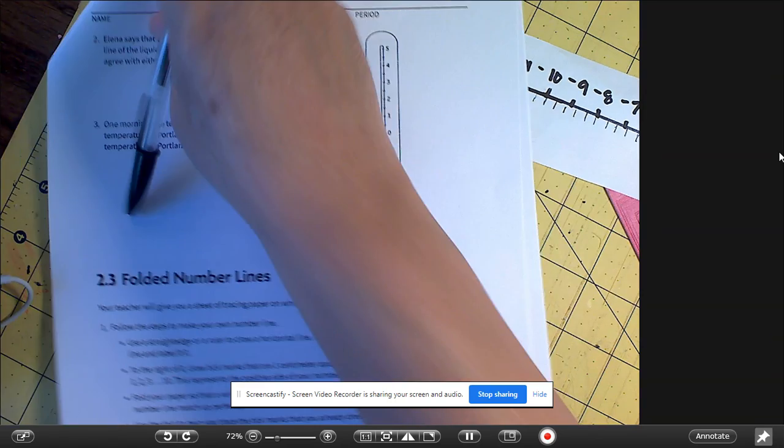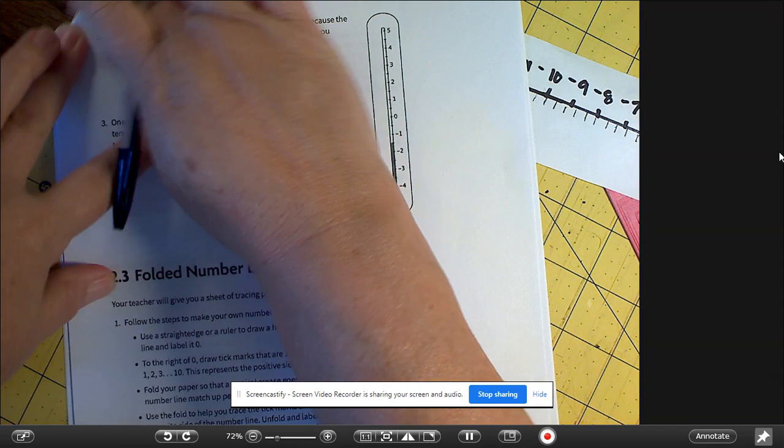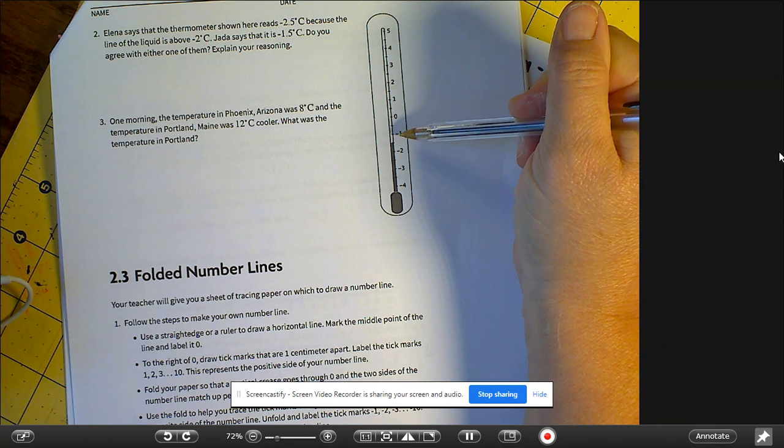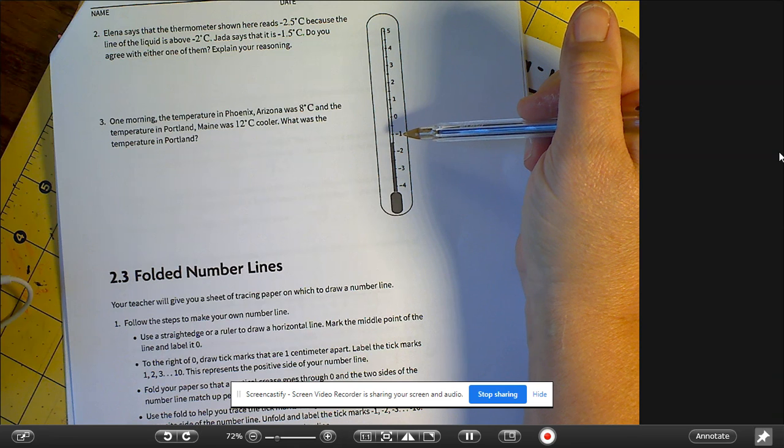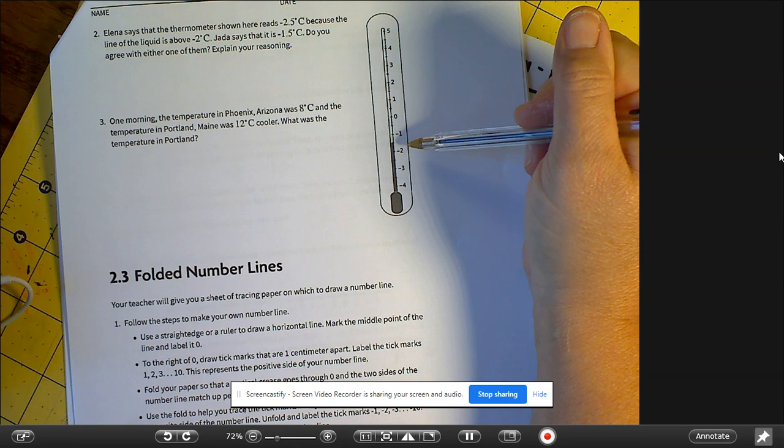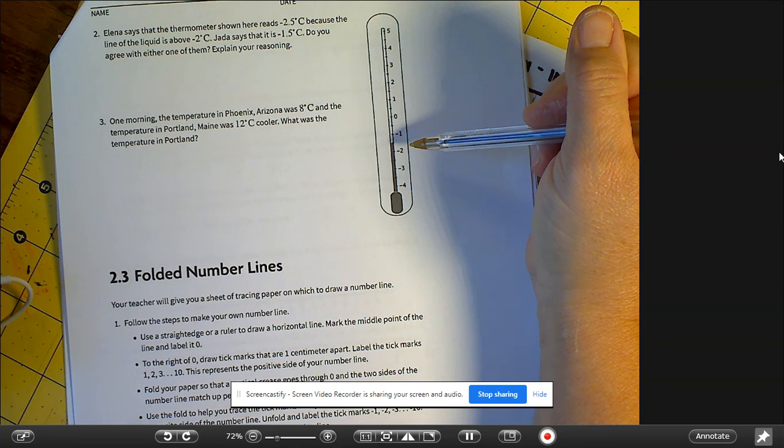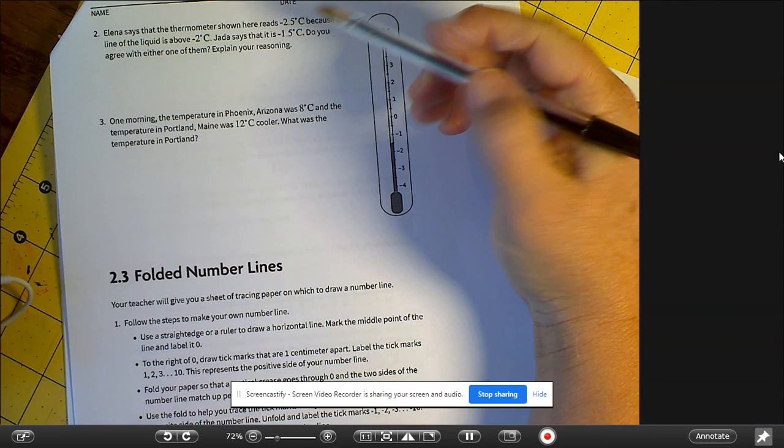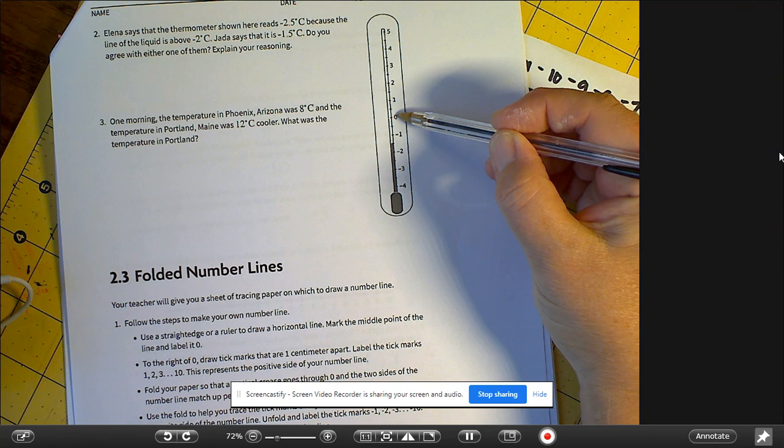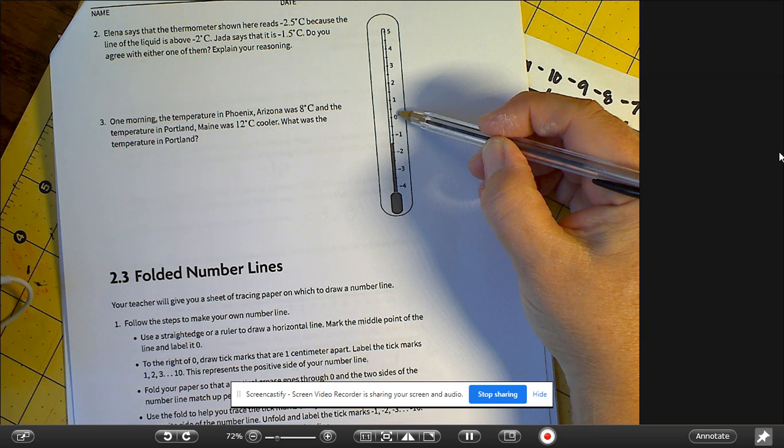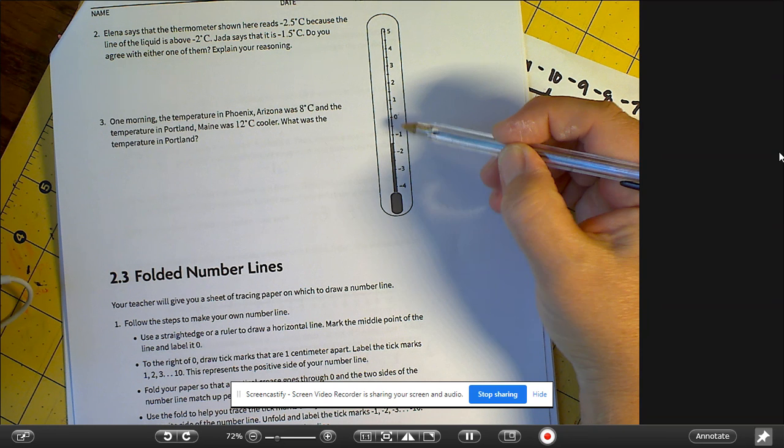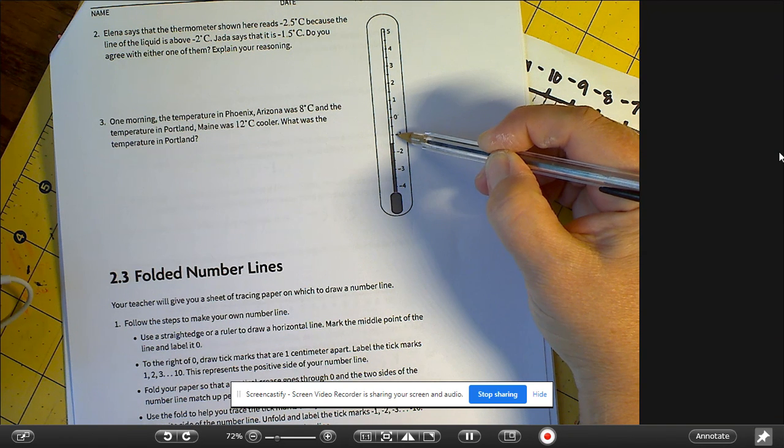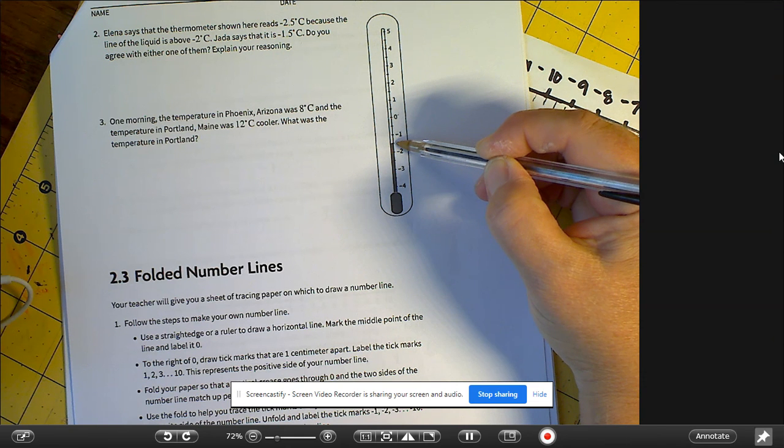All right, so number two, it says Elena says the thermometer shown here reads negative 2.5 degrees Celsius because the line of the liquid is above negative 2. Jada says that it is negative 1.5 degrees Celsius. Do you agree with either one of them and explain your answer? So the answer to this one is you're counting, it's getting larger as you go down. So this would be zero, negative 1, negative 2.